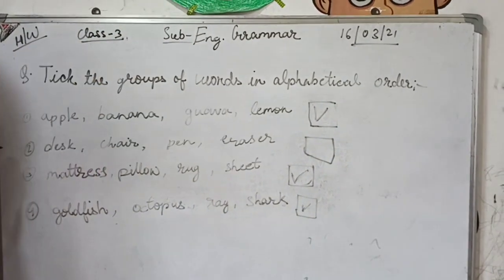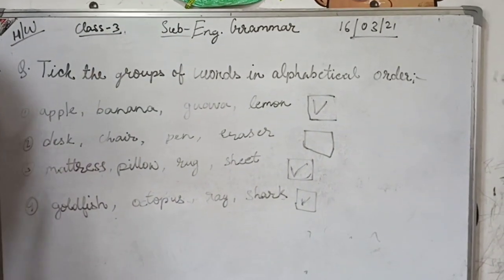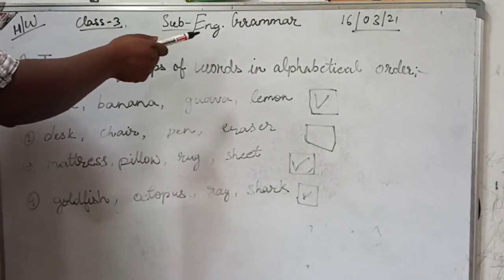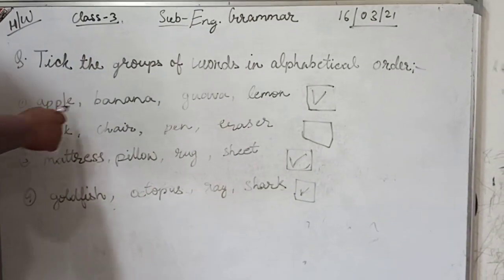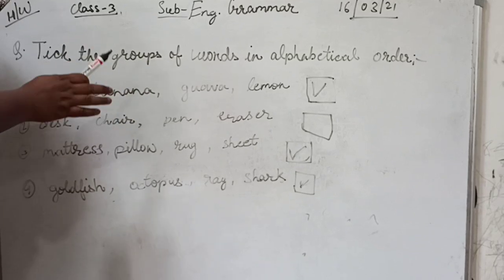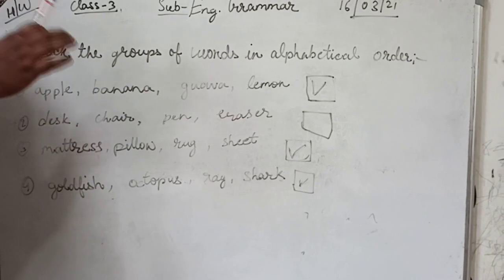This question is your homework. Please listen to the question carefully. Tick the group of words in alphabetical order. You can see there are groups of words which are arranged in alphabetical order. You have to tick that group of words.